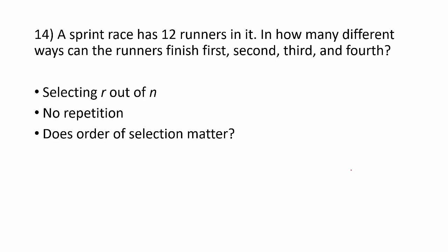A sprint race has 12 runners in it. In how many different ways can the runners finish first, second, third, and fourth? Well, we are looking at 4 out of 12 with no repetition because a runner can't finish first and second in the same race. Does the order of selection matter? Well, do you think finishing first is different than finishing second? That is a yes, so that tells us we are going to be looking for permutations. This time, 12P4, and that computes to be 495.